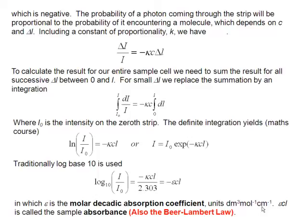As delta I becomes very small, we call it dI. So we integrate dI over I. We're now calling our intensity, which hits the zeroth strip, I₀. And we integrate over all of those strips until we get to the final intensity, I.